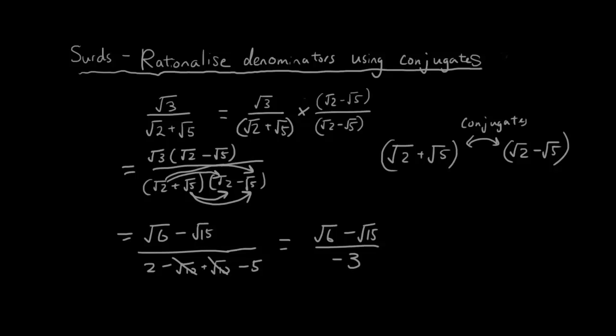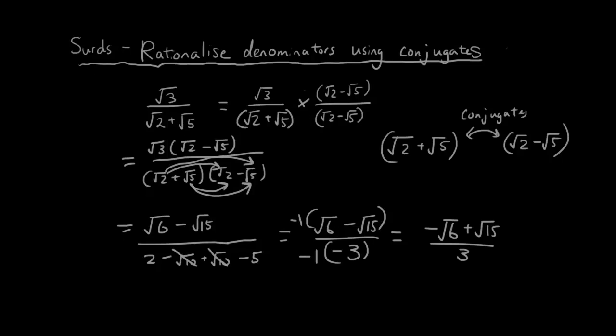So I have just rationalized the denominator. And usually we don't really like to have a negative sign on the bottom, so I would multiply both the top and the bottom by negative 1. So then the answer is negative square root of 6 plus square root of 15 over 3. Just so that I don't have a negative sign on the bottom.